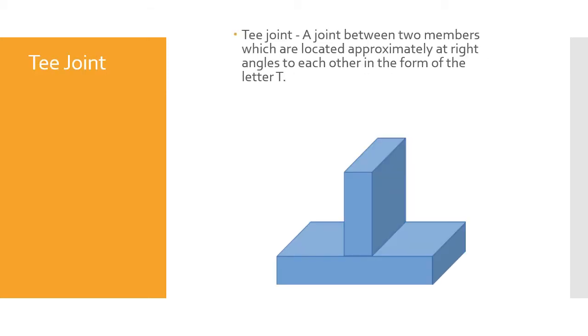A T joint is a joint between two members which are located approximately at right angles to each other in the form of a letter T. Not too much to it, just located approximately at right angles to each other.